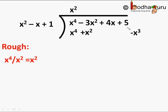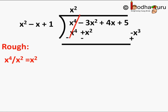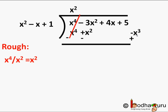Now x³ should come between x⁴ and x² but there is no place, so we write it separately to the right. Now we subtract: x⁴ minus x⁴ is equal to 0. A small thing to remember: we should always write the polynomial in decreasing order of degree, so since x³ is greater than x² we write x³ first.